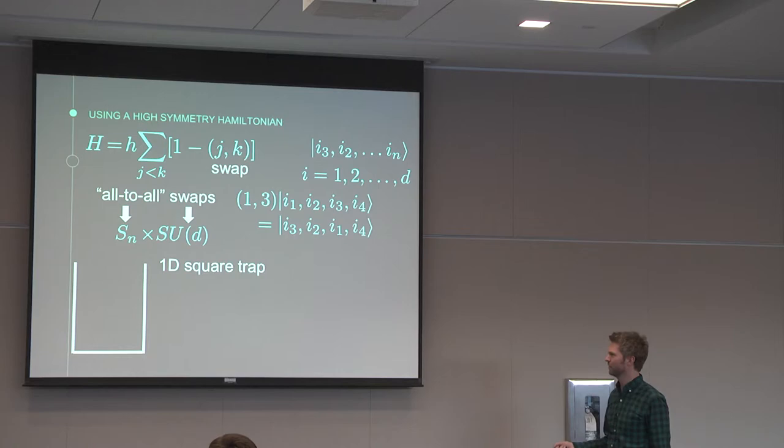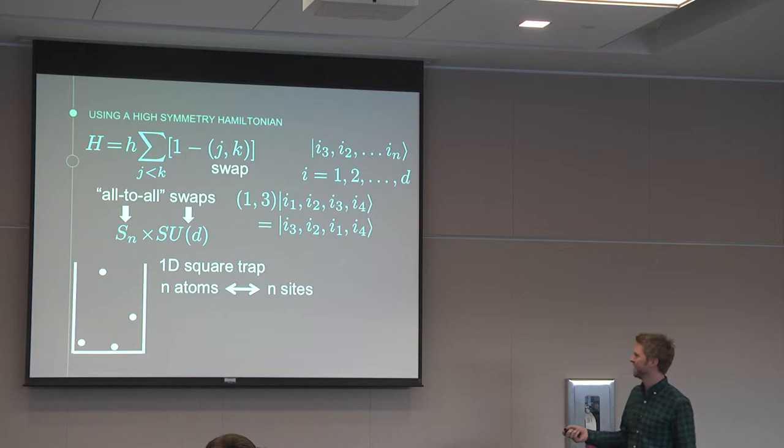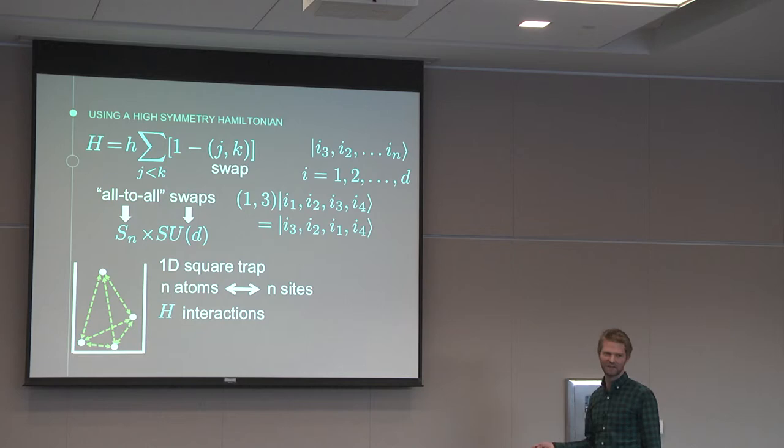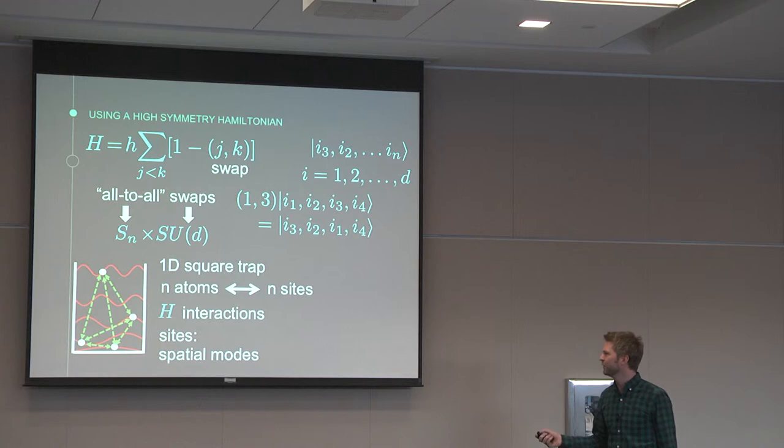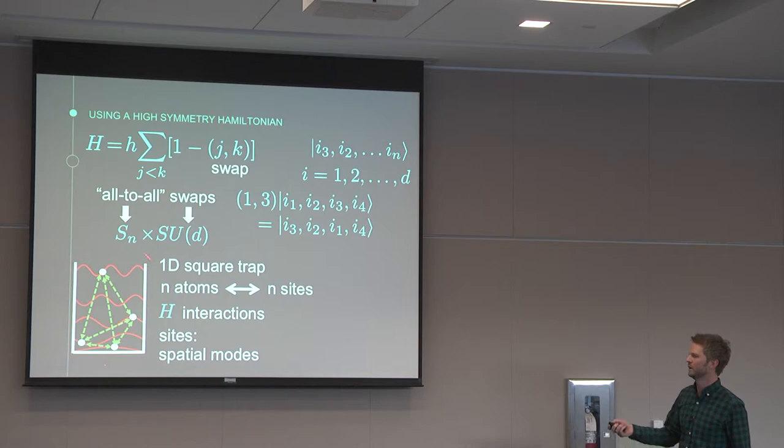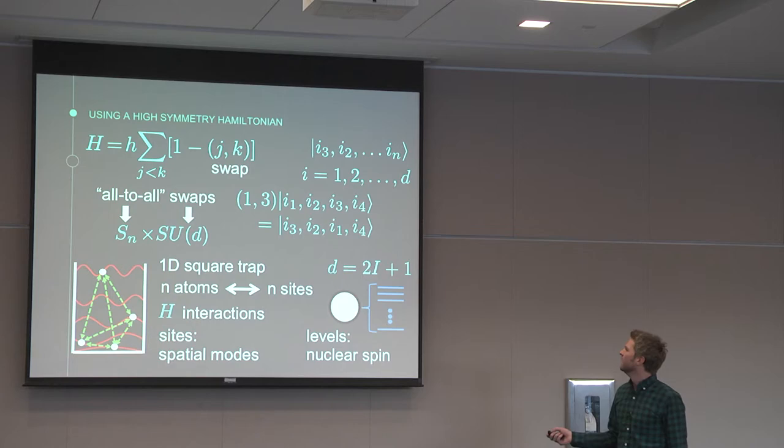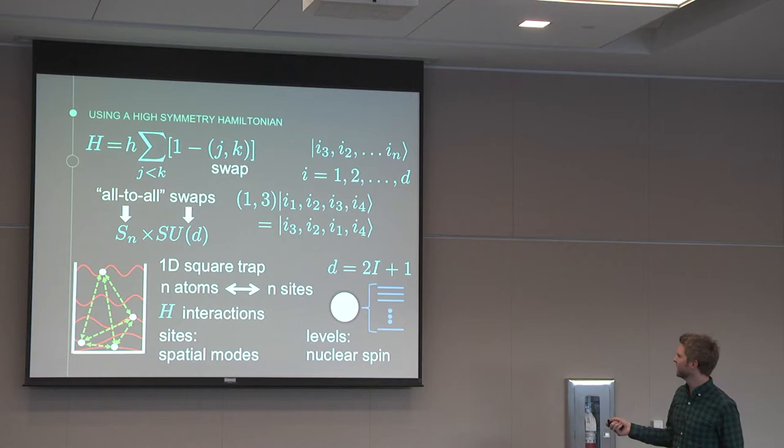How does this arise in nature? How could we actually construct this? If you consider a one-dimensional square trap, like the kind you might have seen in first year quantum mechanics class, and you place atoms in the trap - you'll need n atoms if you want an n-site Hamiltonian - then this Hamiltonian will actually arise under certain conditions as the interaction Hamiltonian between the atoms. The sites of the Hamiltonian will correspond to the spatial modes of the atoms. That's the sites, but the levels - the levels from 1 to d - correspond to the nuclear spin degrees of freedom of the atoms. For a particular atomic species with nuclear spin i, this is the number of levels you will obtain.